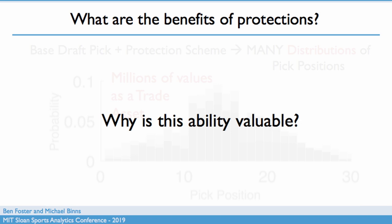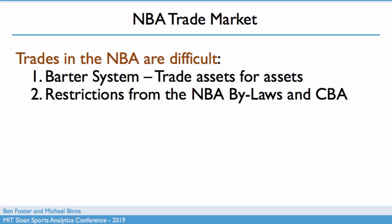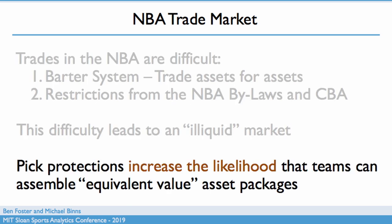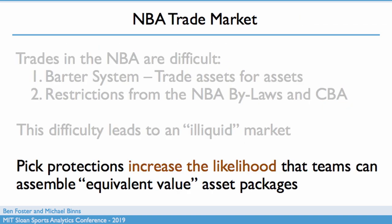Trading in the NBA is a difficult thing to do. It's a barter system, with lots of restrictions from the NBA bylaws and the CBA. From a market efficiency standpoint, this is a really illiquid market — it's very difficult to make transactions to buy and sell at market rates. Pick protections are the one thing that appears to increase the likelihood of a transaction occurring. If you hold very high value and very low value assets and are trying to trade for a medium value asset, with pick protections you can raise or lower their value, increasing the likelihood you can execute a trade.